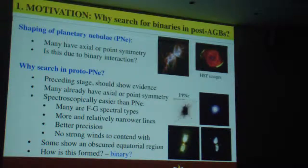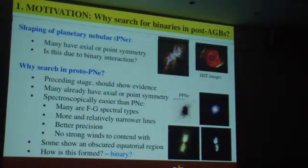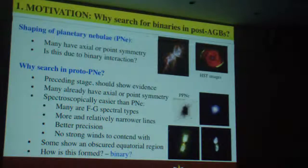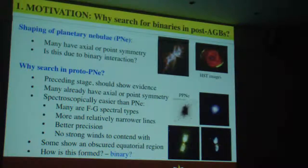So why am I looking at post-AGB proto-planetary or pre-planetary nebulae? The shaping of planetary nebulae is known to be due to binaries. But proto-planetary nebulae have a distinct advantage for spectroscopic binary searches — they're the preceding stage, and much shaping has already occurred. They're spectroscopically easier because the central stars — the ones I've chosen — are F and G type stars. They have more, and relatively narrower, lines than those found in planetary nebulae, giving us better precision. Some clearly show an obscured region, perhaps a torus, raising the question of whether shaping is due to a binary.